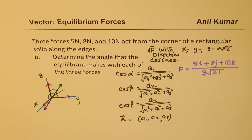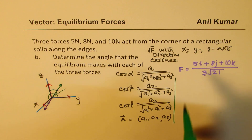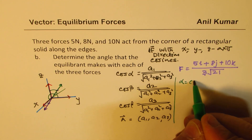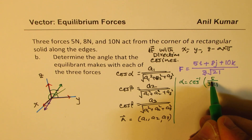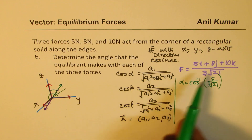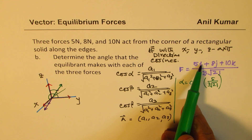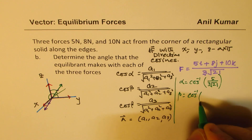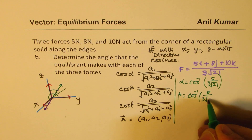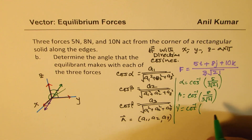Using the direction cosine formulas: α = cos⁻¹(5 / 3√21), β = cos⁻¹(8 / 3√21), and γ = cos⁻¹(10 / 3√21). The magnitude is 13.75 Newtons. So α = cos⁻¹(5/13.75) ≈ 68.7°, β = cos⁻¹(8/13.75) ≈ 54.4°, and γ = cos⁻¹(10/13.75) ≈ 43.3°. These are the angles the resultant makes with x, y, and z.